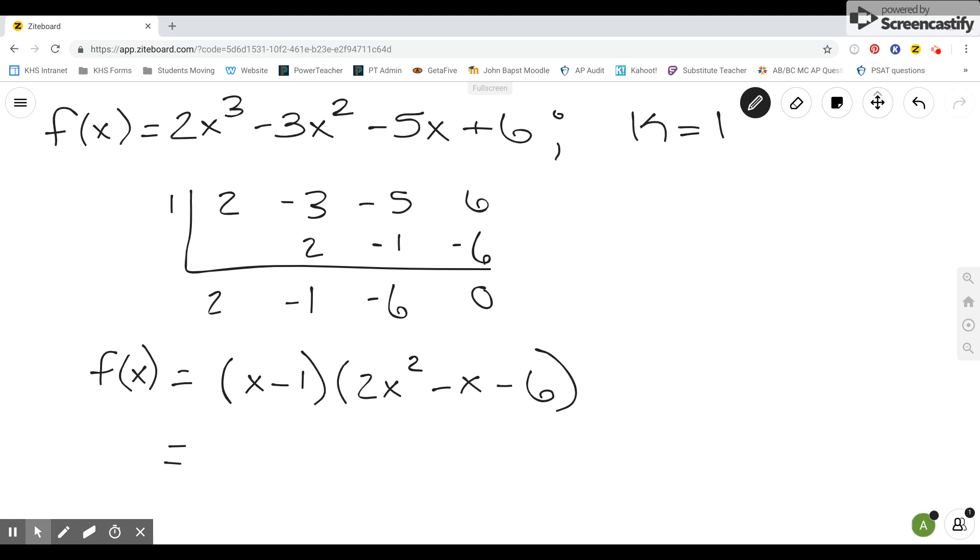Then this actually works out quite nicely because we don't have to do synthetic division again. We might think that we need to factor the 2x squared minus x minus 6 into two factors.